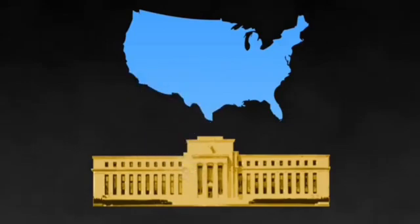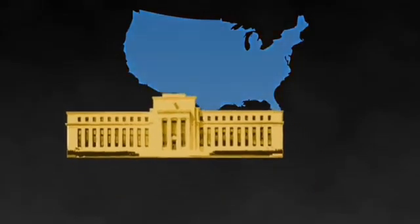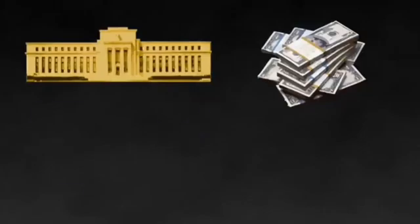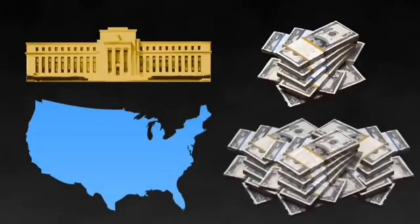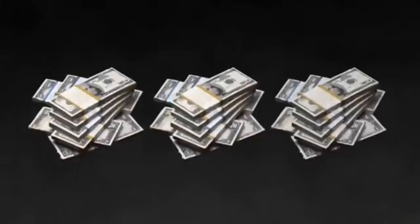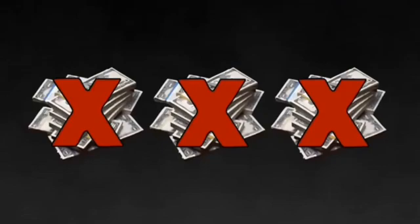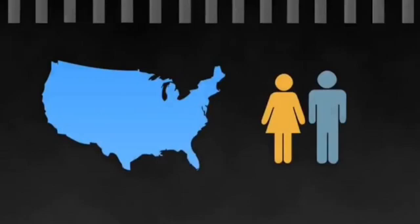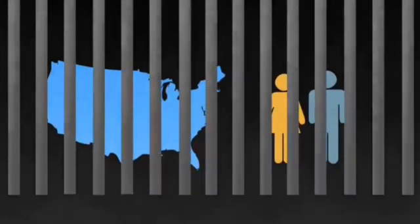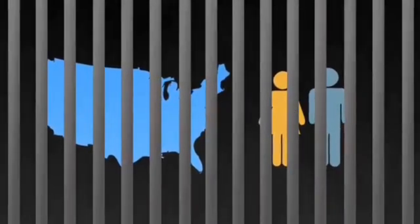So to clarify, the Fed creates money from nothing, loans that money to the U.S., and then charges interest on that money. What this means is that there is never and will never be enough money in circulation or in existence to pay back that debt. We as a country, as well as private citizens, are forever enslaved by debt with no way of ever paying it off.